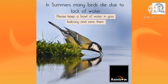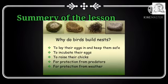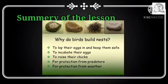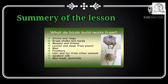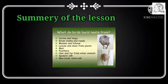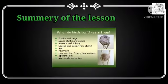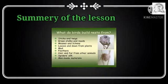Here we have completed our sixth lesson. Now the summary: first, birds build their nests to lay, hatch, and protect their eggs and young ones. The materials used to build nests include twigs, grass, hay, straw, and pebbles.